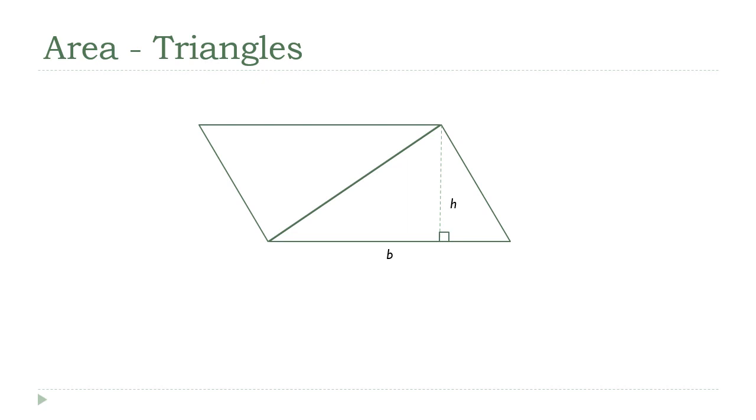Look at what happens. Because these two angles are congruent, the two horizontal sides must be parallel. And because these two angles are congruent, the two up and down sides must also be parallel, which means that this figure that I made by combining these two identical triangles together is a parallelogram.